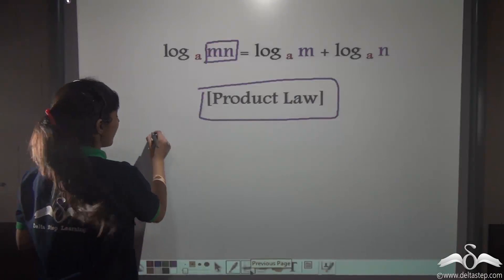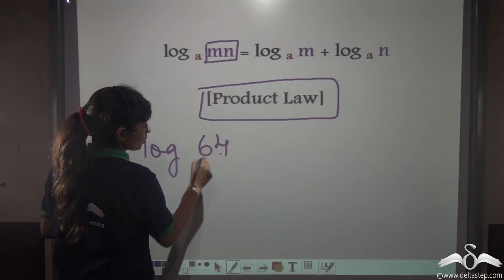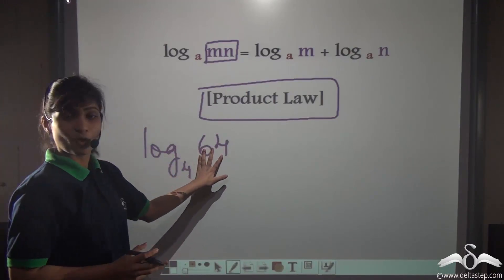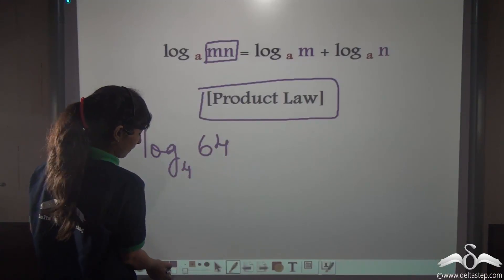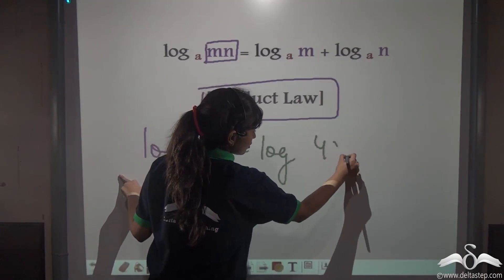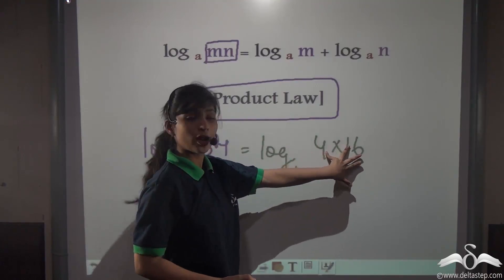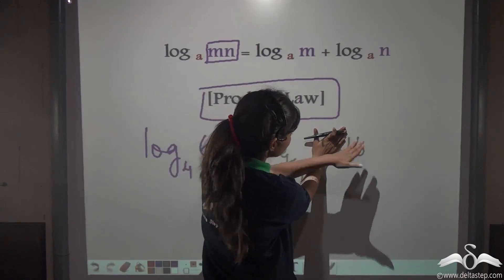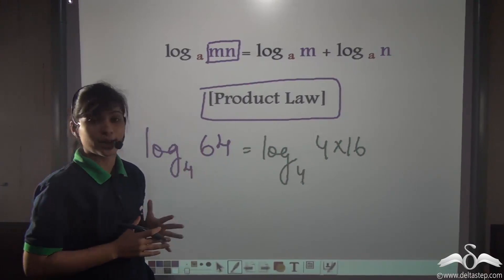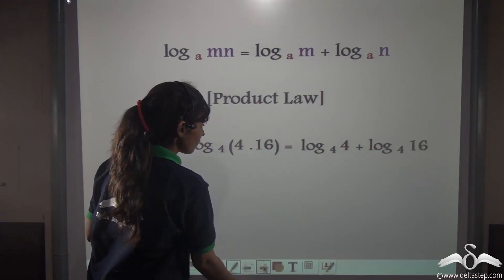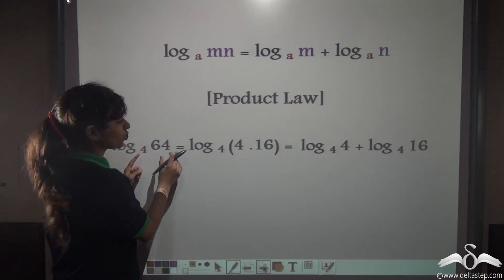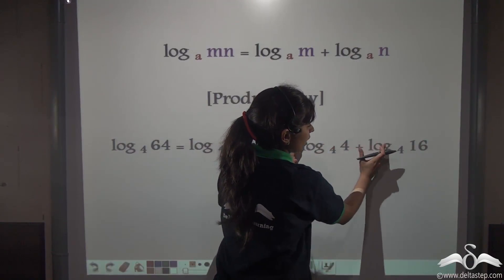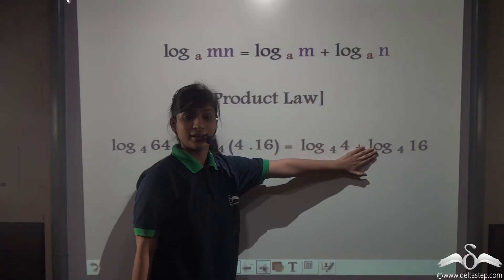How does this help? Let us find out. Say log of 64 to the base 4. This is not a very big number, but just to understand this law we are taking a small number. This 64 can be expressed as a product of two numbers — log of 4 into 16 to the base 4. Now it has become a product of two numbers. According to our law, find out the log of 4 to the base 4 and log of 16 to the base 4, then add them up and see what answer you get. You will get the correct answer.